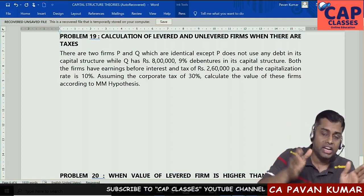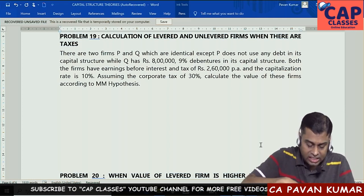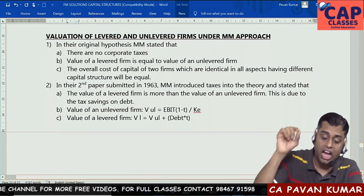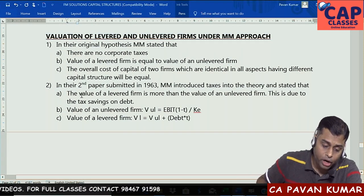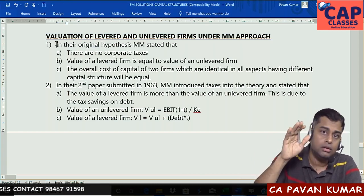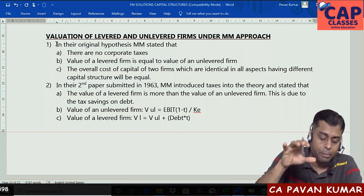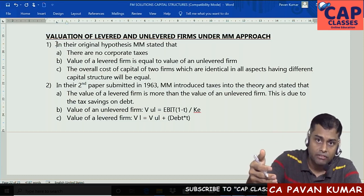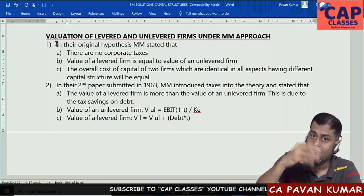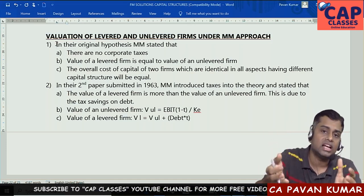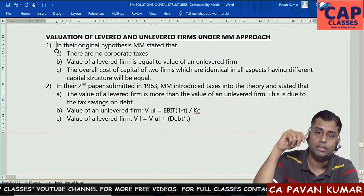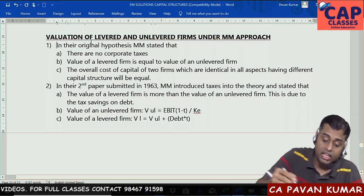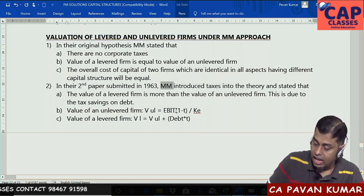Now let us go to MM approach Paper 2. Paper 1 ignores taxation; Paper 2 considers taxation. In their second paper submitted in 1963, MM introduced taxes into the theory. In Paper 1 (no corporate taxes): value of levered firm equals value of unlevered firm. In Paper 2 (with taxes): value of levered firm will be more than value of unlevered firm, because of the tax advantages on debt.